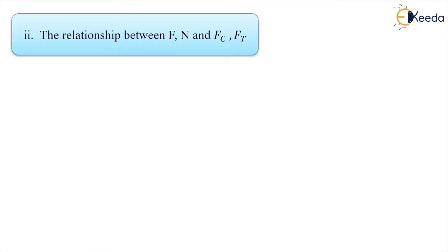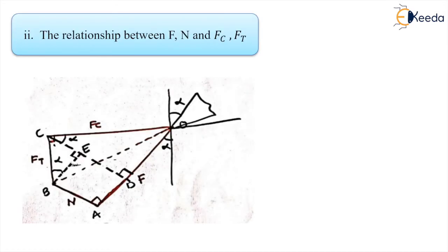Now, as we have seen the relation between fsn, fs and fc, ft, we can also find the relationship between frictional force F, normal force N — these are the actual forces — with fc and ft, which are the measurable forces. I will take that part of the Merchant circle diagram where F, N, fc, and ft are available.